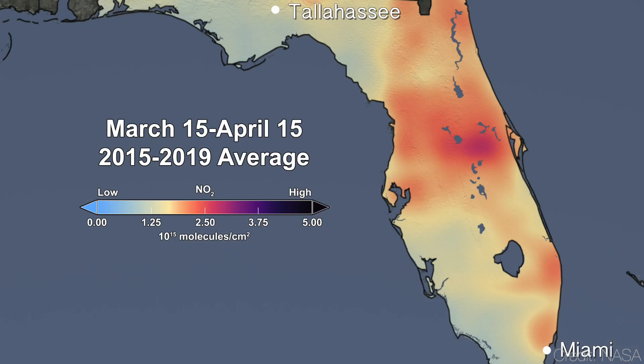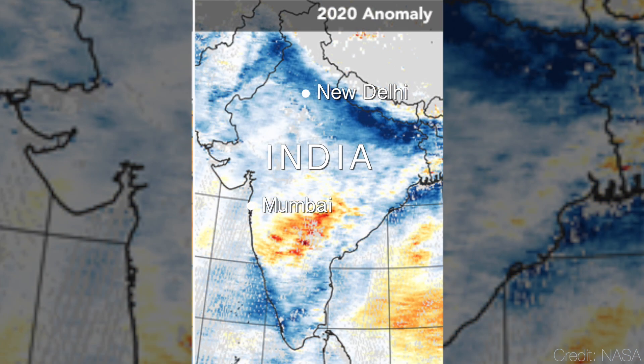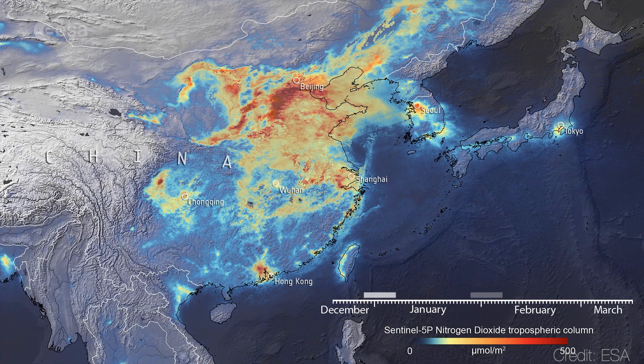These satellite maps show the concentration of nitrogen dioxide before and after regions issued orders for residents to stay at home.